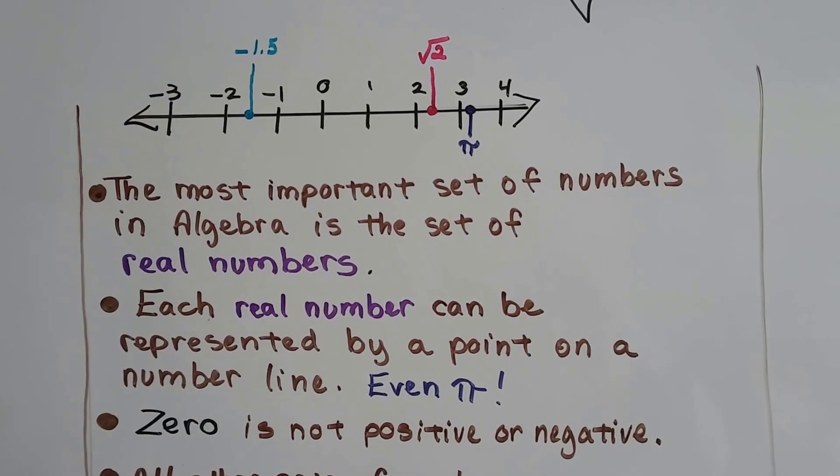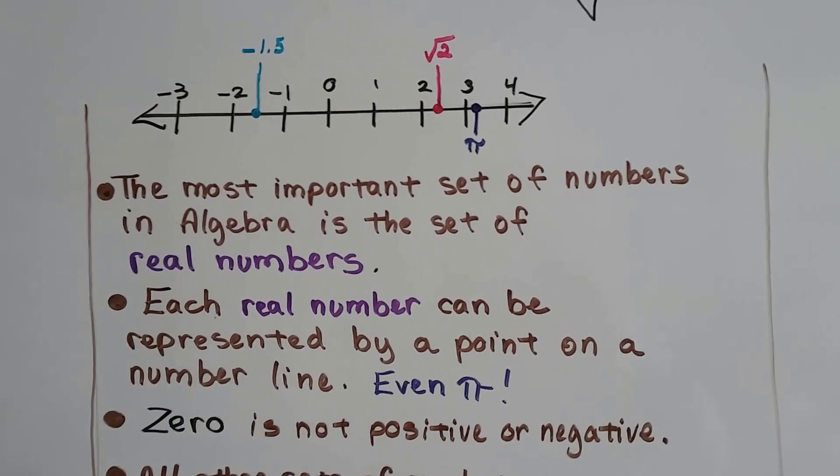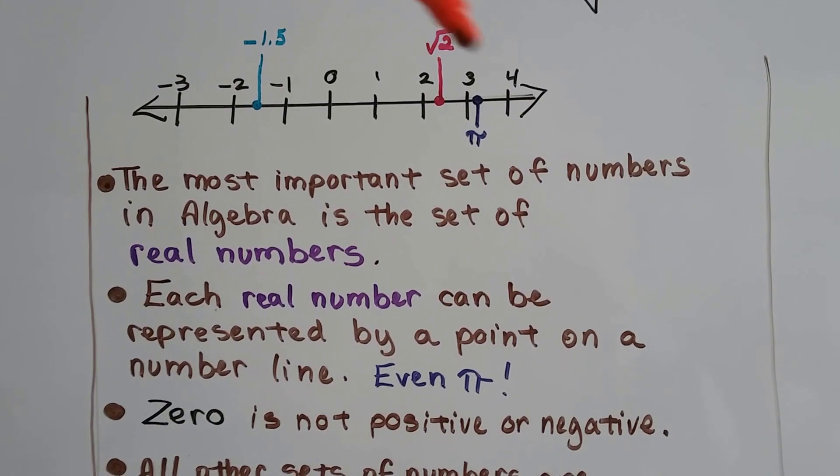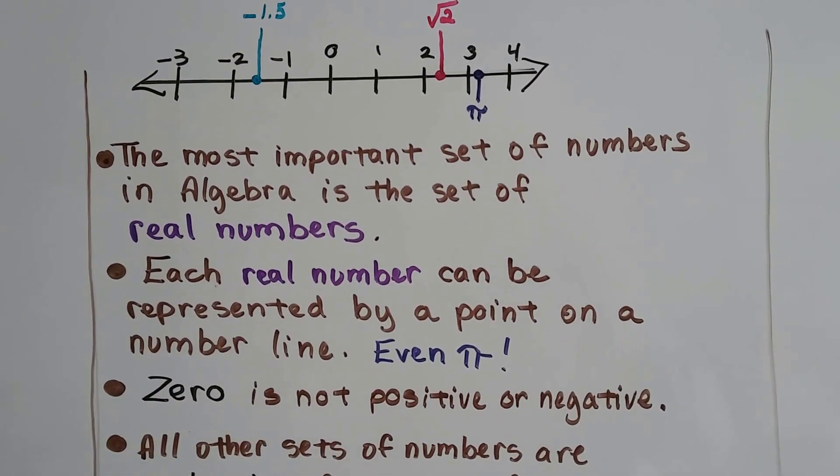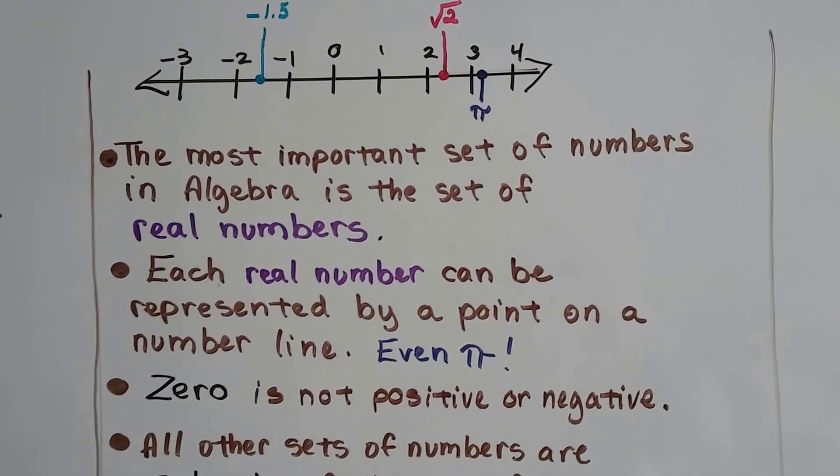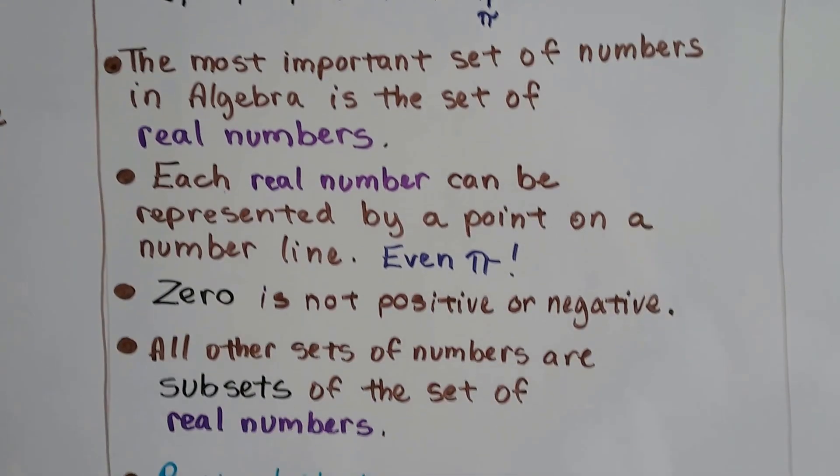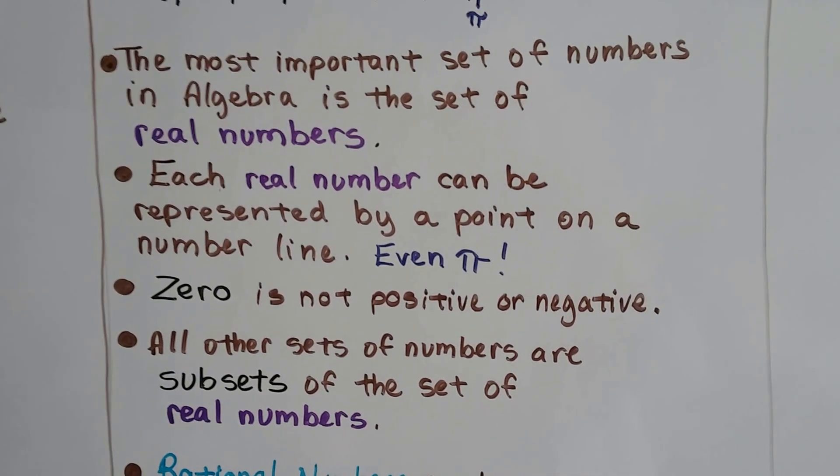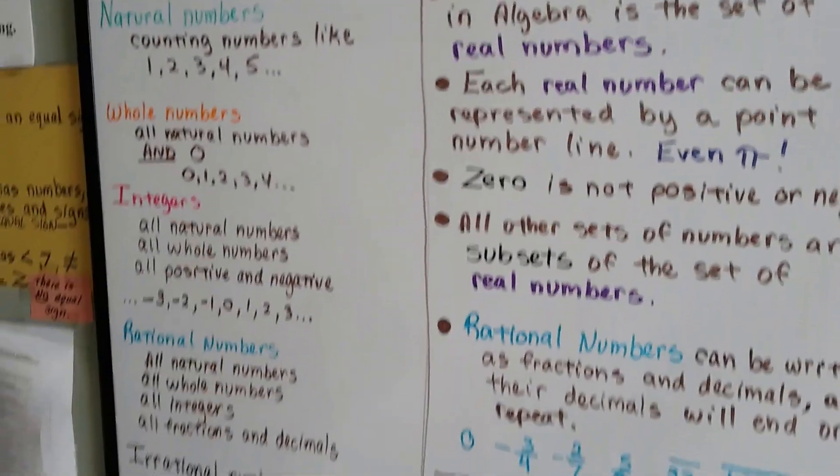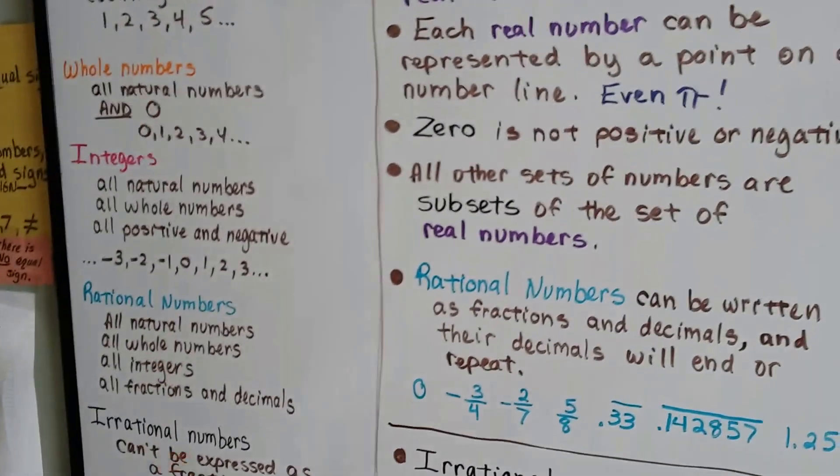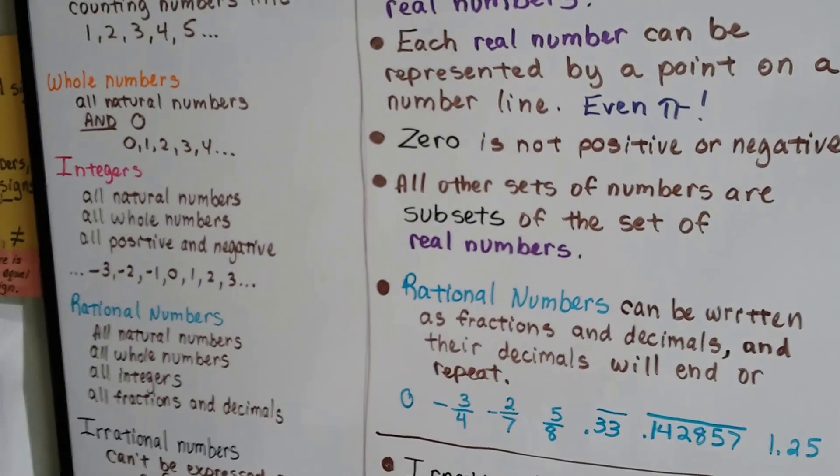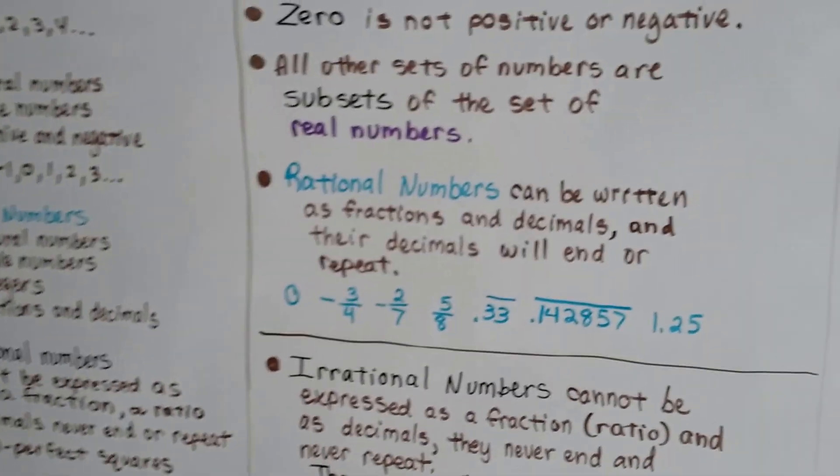The square root of 2 is not a perfect square—it's an irrational number, but it's approximately right here on a number line. Whether they're rational or irrational, they can still be located approximately on a number line. Zero is not positive or negative, but it is an integer and a whole number.